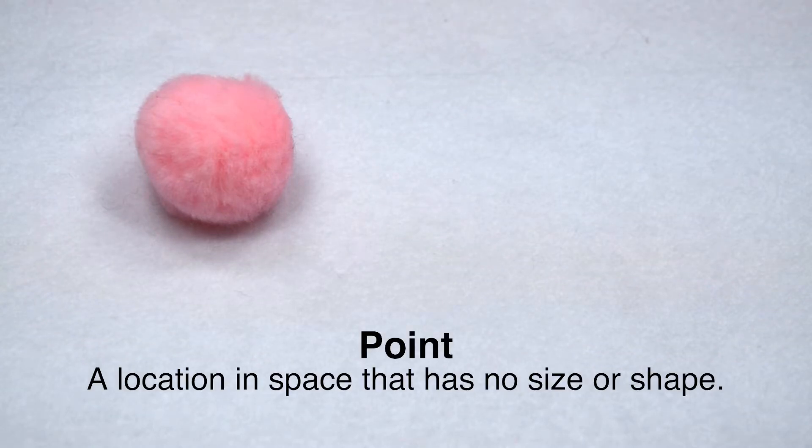A point is a location in space that has no size or shape. We represent a point with a dot and we label it with a capital letter. So we would refer to this as point A.